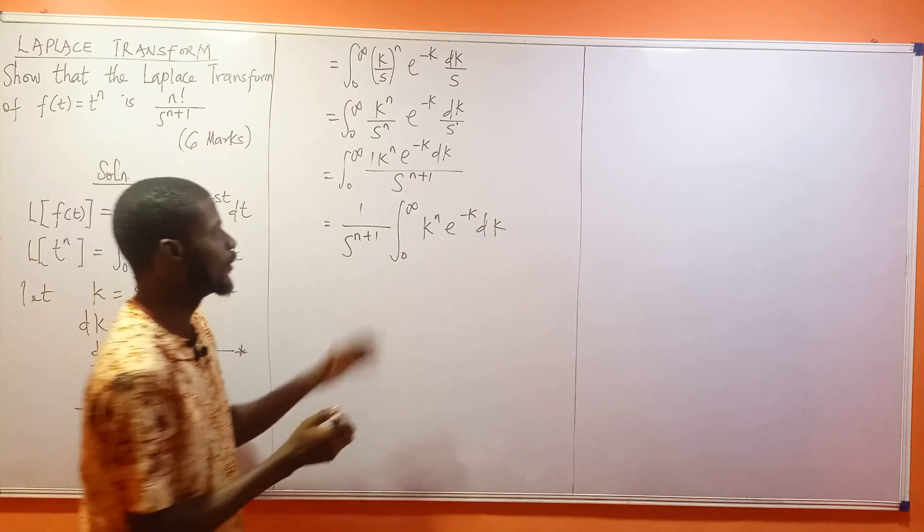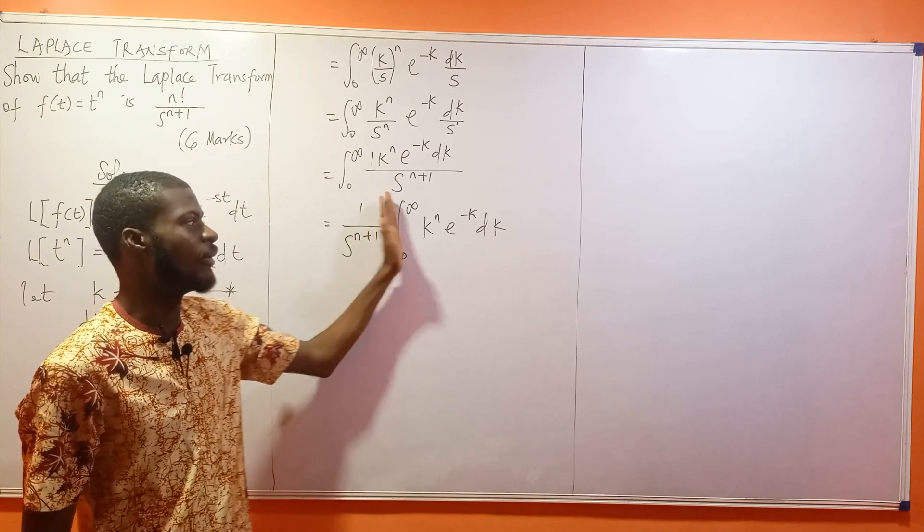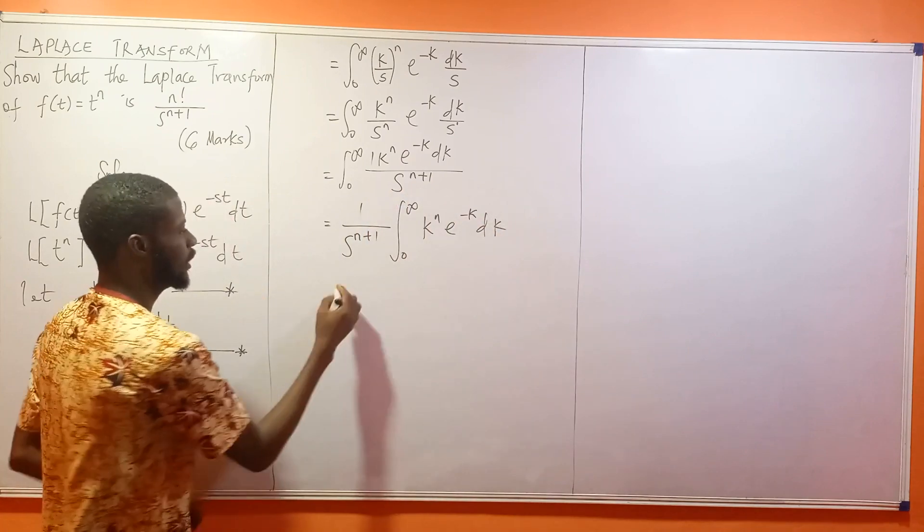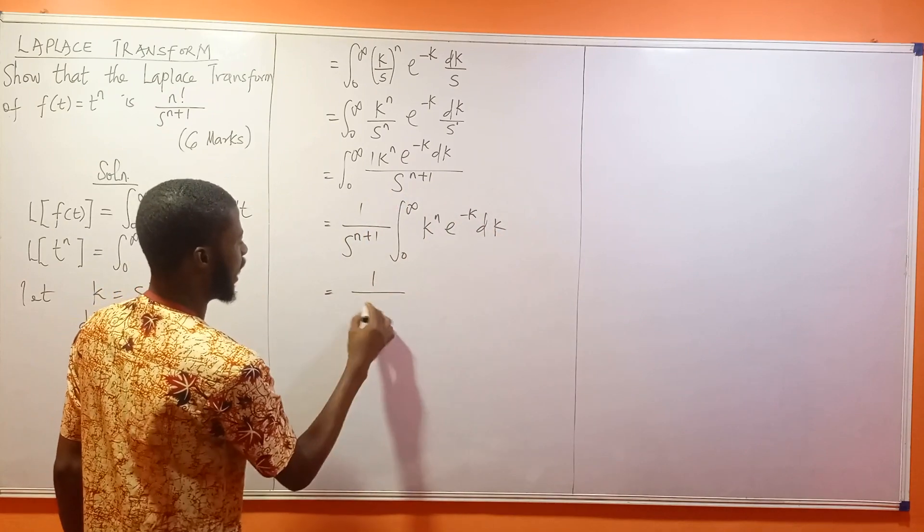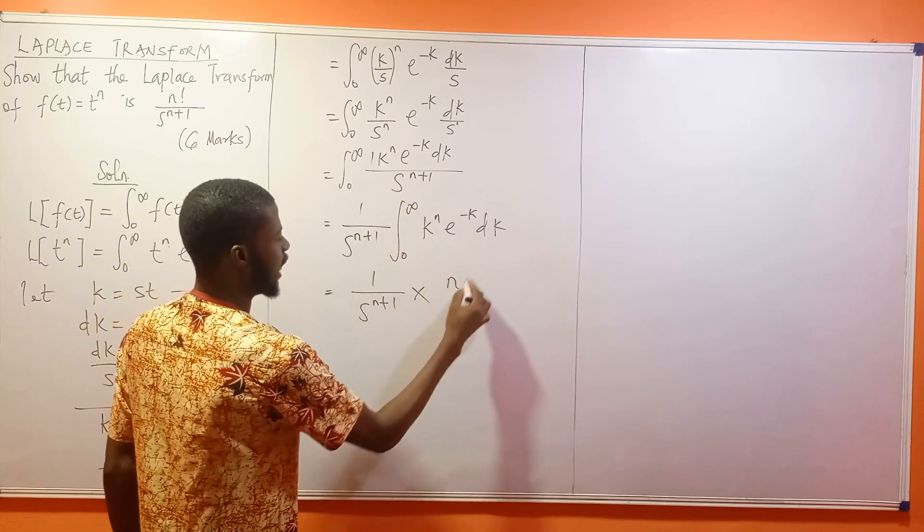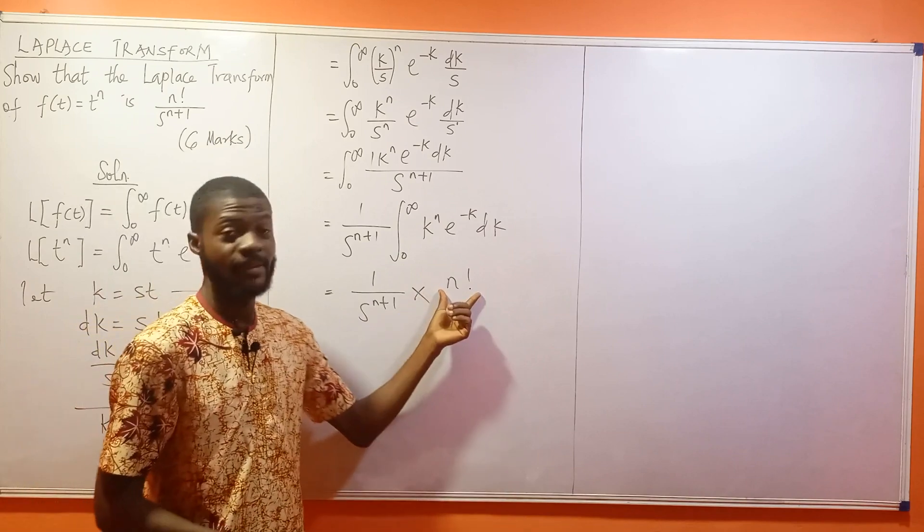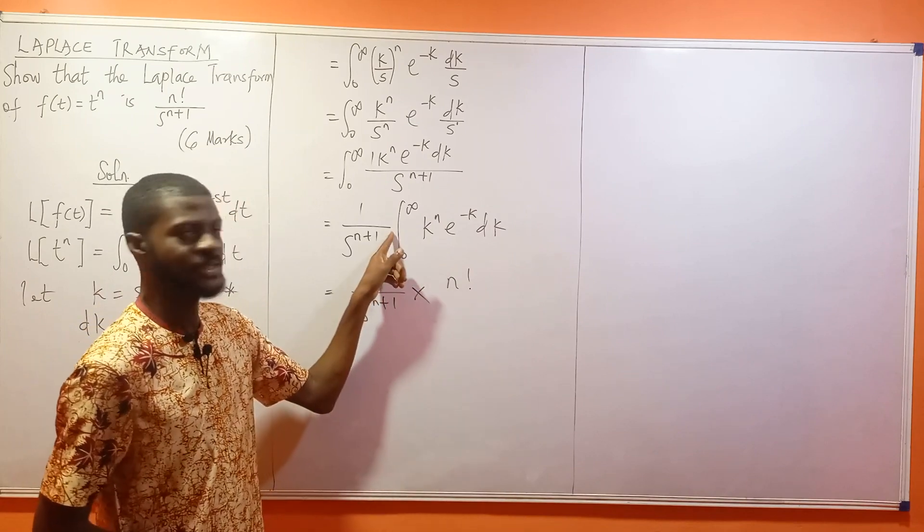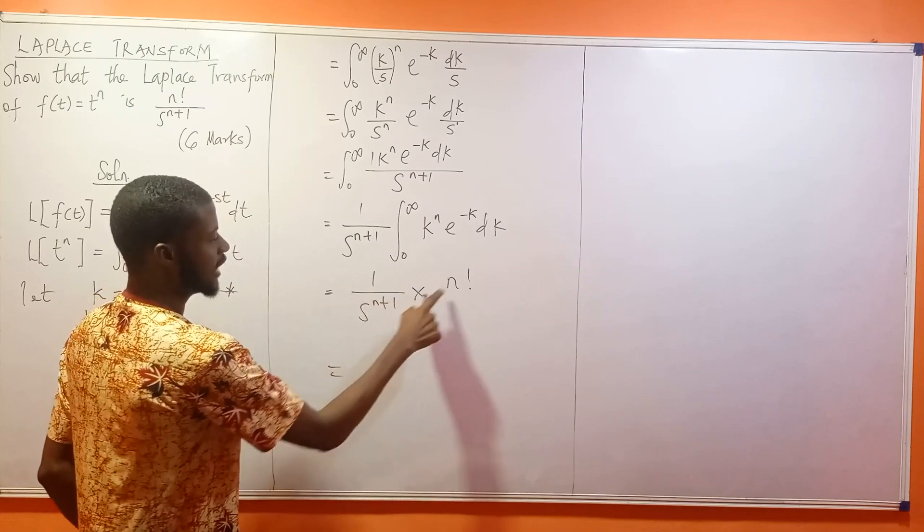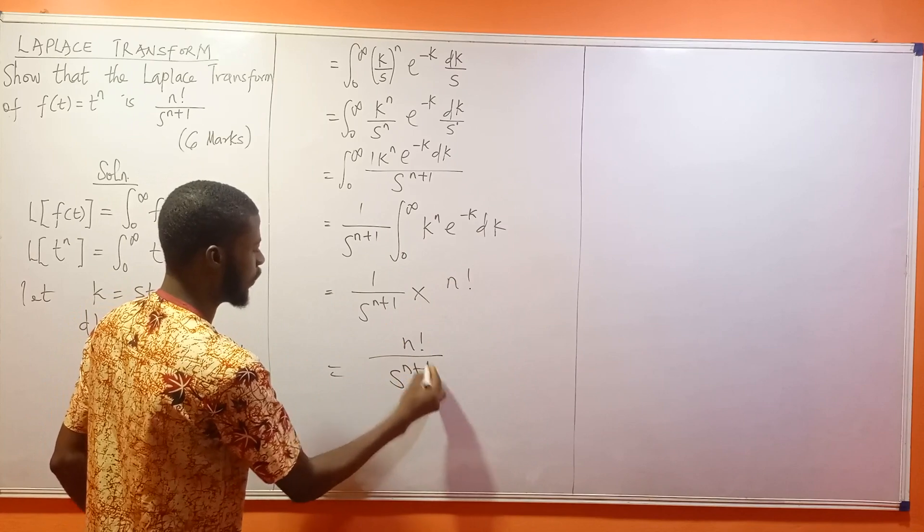This integral is the gamma function! The integral of k^n e^(-k) dk from 0 to infinity equals n factorial. So the final answer is (1/s^(n+1)) × n! = n!/s^(n+1).